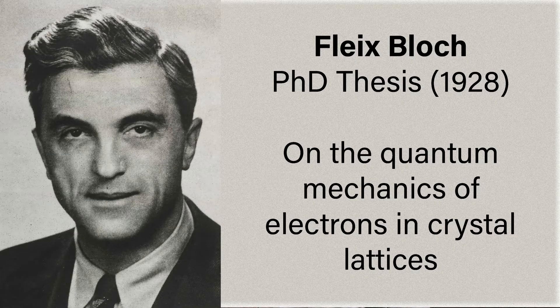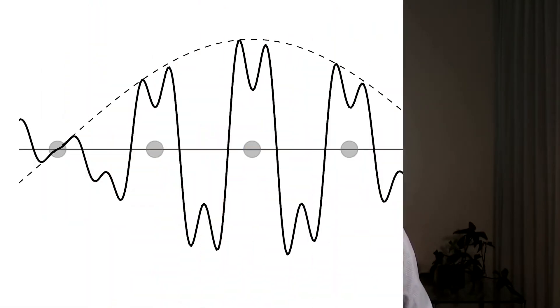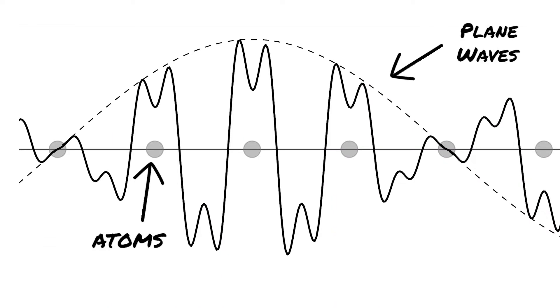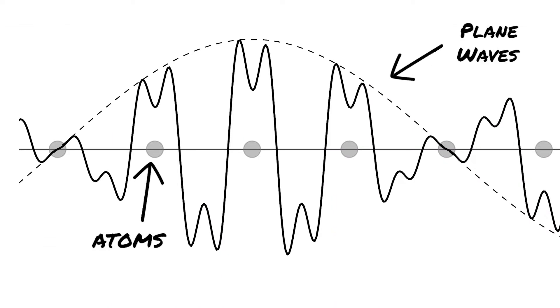Back in 1928, Felix Bloch published his doctoral thesis on the quantum mechanics of electrons in crystal lattices, in which he explained that electrons moving in a periodic potential can be described as a series of plane waves. By a periodic potential, he was referring to the atoms in a crystal lattice that have a repeating spatial pattern. Importantly, he was right.